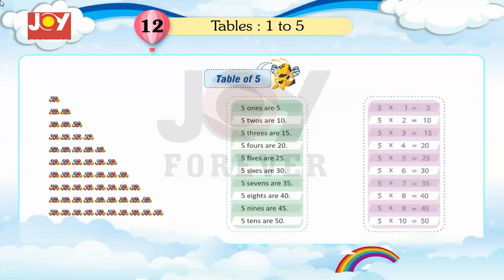5 fives are 25, 5 sixes are 30, 5 sevens are 35, 5 eights are 40, 5 nines are 45.